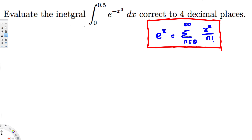Let's do this problem. This question is asking to evaluate the integral from 0 to 0.5 of e to the power of negative x cubed dx, correct to four decimal places. This is not easy to integrate in this form, so what we have to do is convert it into a power series pattern and then we can integrate easily.